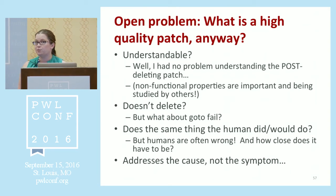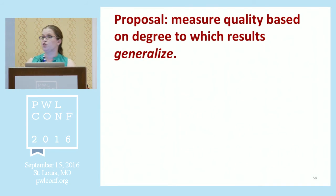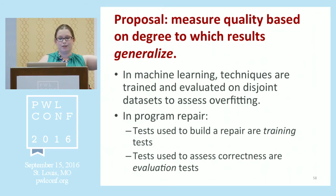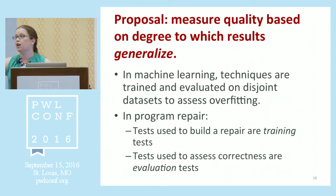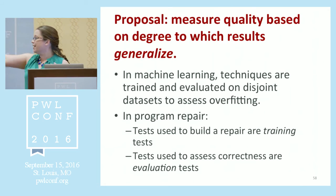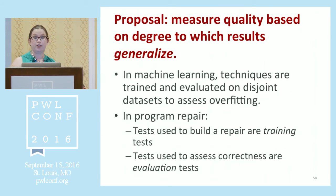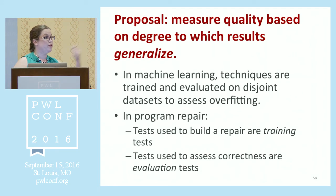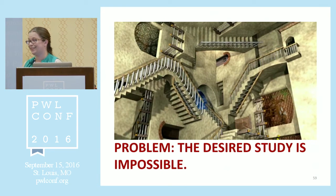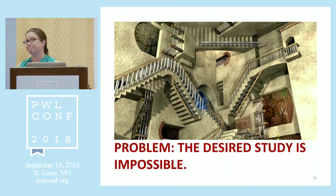The reason we haven't solved quality yet is because we don't yet know how. One proposal is to measure quality based on the degree to which the results generalize to a second set of tests. If you're in machine learning evaluating a model, you test it on a separate set of data than you trained on to assess overfitting. The tests used to build the repair are the training tests, and you could have a second set of tests to assess correctness. It would be super cool if it weren't totally impossible — because it requires two high-quality full-coverage test suites and we don't even have one, even for PHP.